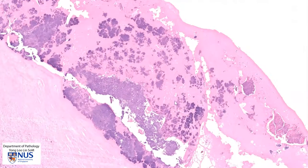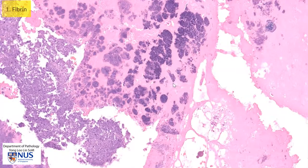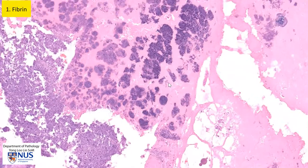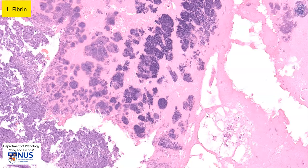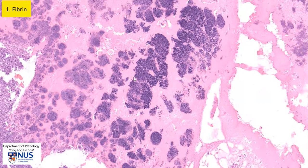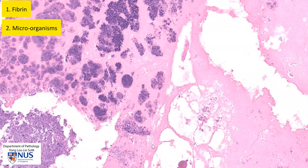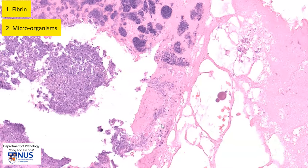On high magnification, these vegetations actually comprise fibrin, which is this trendy pink material, and all these coarse granular bluish deposits are actually bacterial organisms. These are clumps of bacterial organisms, and if the case was a little bit more fresh, we can also usually see a lot of neutrophils.